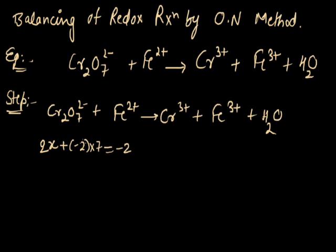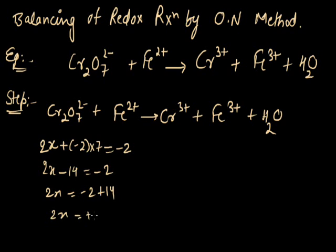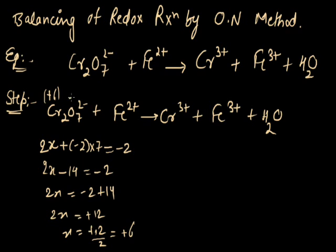That is the total charge on the dichromate ion. Solving: 2X minus 14 equals minus 2, so 2X equals minus 2 plus 14, giving 2X equals plus 12. Therefore X equals plus 6. The oxidation number of chromium is plus 6 in the dichromate ion. The oxidation number of oxygen is minus 2.